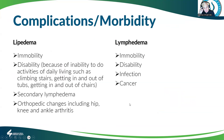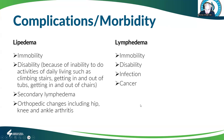Complications of lipedema include immobility, disability, pain, secondary lymphedema, and orthopedic changes — it puts extra stress on the hip and knee. That contrasts with lymphedema, which can also cause immobility and disability, but the primary complications are infection and cellulitis, and you can actually get cancer — because the area where lymphedema is present has impaired lymphatics, which are so important to the immune system, creating an immune deficit in areas of lymphedema.